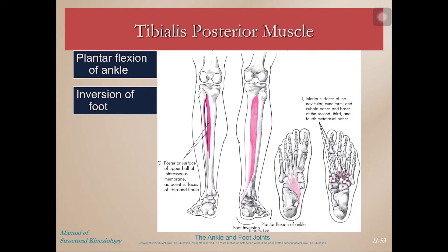The tibialis posterior arises between the fibula and the tibia. It does plantar flexion because it's on the posterior side, and also inversion of the foot. It has multiple insertion points on the inferior surfaces of the navicular, cuneiform, cuboid bones, and bases of the metatarsals. Because of all those insertion points and because it wraps around the medial side of the foot, the tibialis posterior is crucial for maintaining a nice, adequately high arch. If you have a weak or lengthened tibialis posterior due to repeated chronic stress, your arches might start to drop.